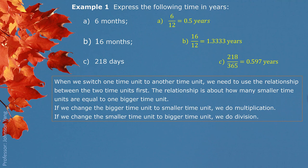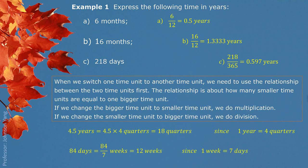Generally speaking, when we switch one time unit to another, we need to use the relationship between the two units first — specifically, how many smaller time units equal one bigger time unit. If we change the bigger time unit to a smaller one, we do multiplication. If we change the smaller time unit to a bigger one, we do division. For example, 4.5 years switched to quarters: multiply by 4 gives 18 quarters, since 1 year equals 4 quarters. And 84 days switched to weeks: divide by 7 gives 12 weeks, since 1 week equals 7 days.